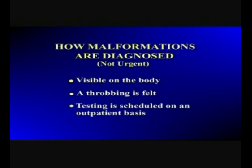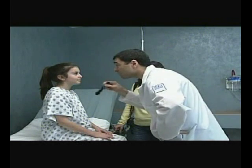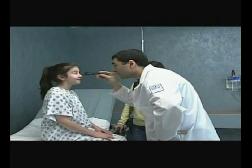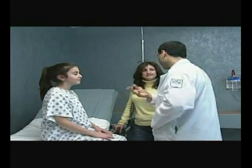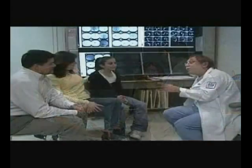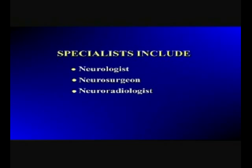Other times, the malformation is noticed or a throbbing is felt at the site. In these cases, testing, while necessary, is not urgent and can be taken care of on an outpatient basis. Let's review the diagnostic phase and the testing that takes place. Patients are usually first seen by their primary doctor, who conducts a clinical examination. If a vascular malformation is suspected, referrals are made for diagnostic tests and consultations with specialists.